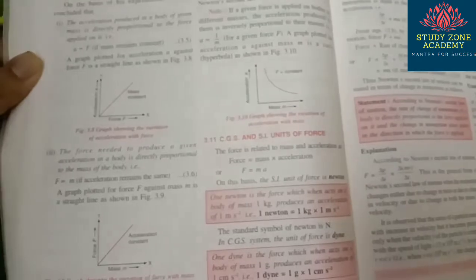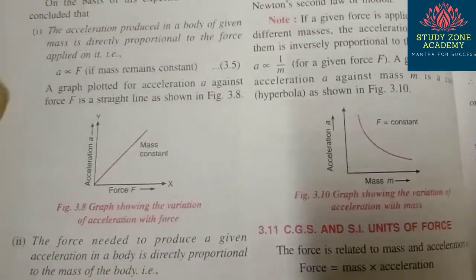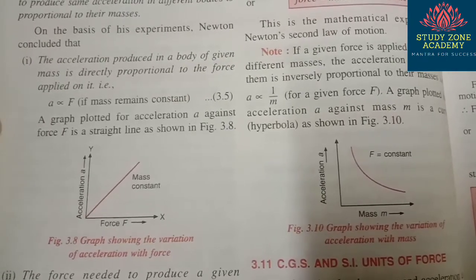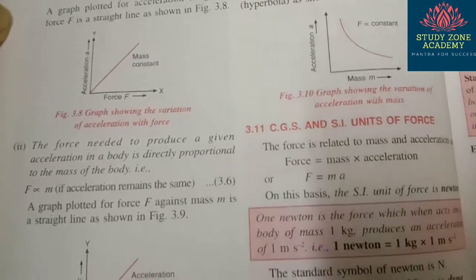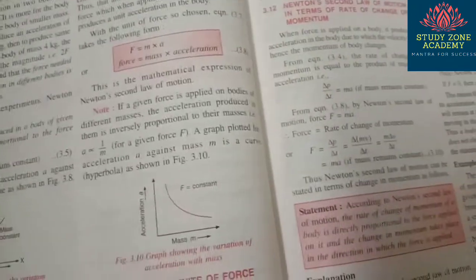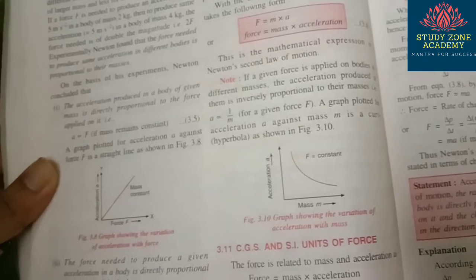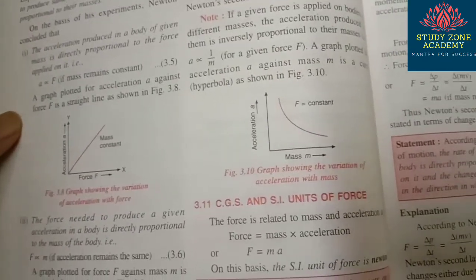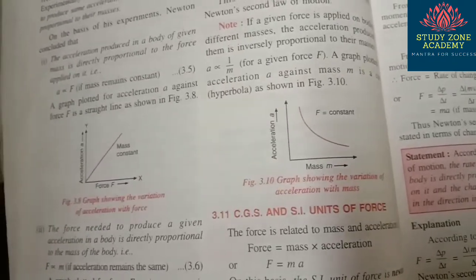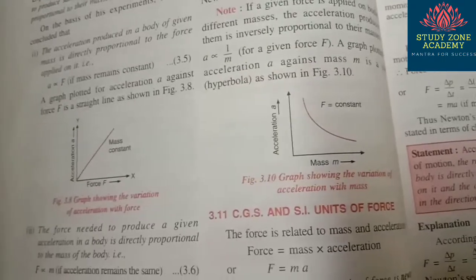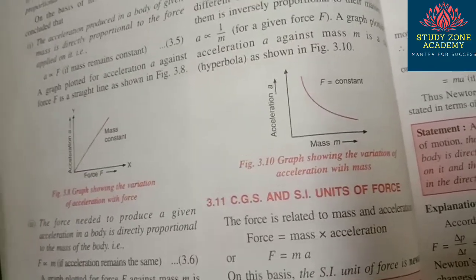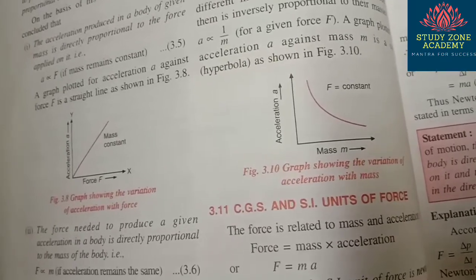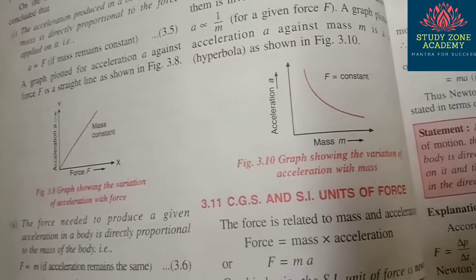All three graphs related to Newton's second law are important: first, acceleration is directly proportional to force for a given mass; second, force needed to produce a given acceleration is directly proportional to mass. The third graph — showing variation of acceleration with mass — is particularly important. This is an asymptotic graph, meaning the curve never touches either axis.